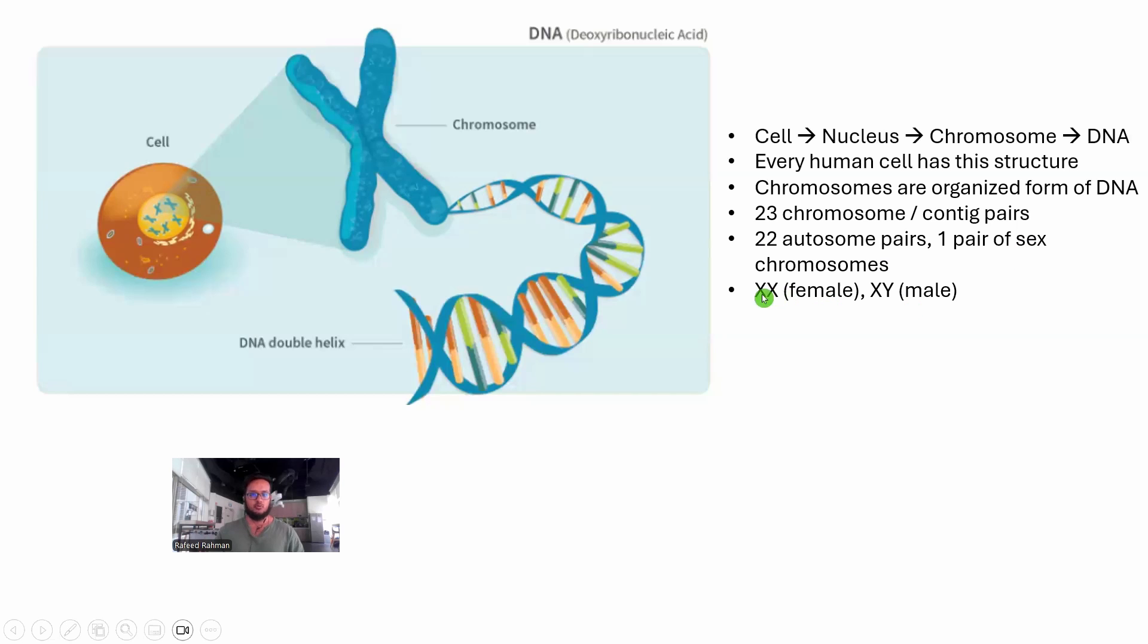The one pair of sex chromosome is the one that determines whether you are female or male. So if you are female, those chromosomes will be XX. That pair of chromosome will be XX and if you are male, it will be XY.